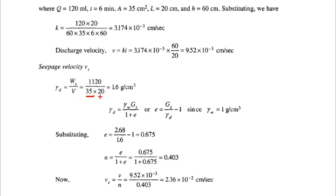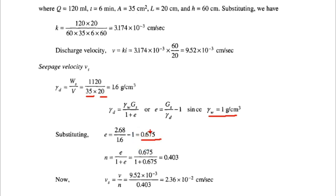Here, volume equals area × height. Using the formula gamma_d = Gs × gamma_w / (1 + e), with gamma_d = 1.6 g/cm³ and gamma_w = 1 g/cm³, we rearrange to get e = (Gs / gamma_d) × gamma_w − 1. Substituting: e = (2.68 / 1.6) − 1 = 0.675.